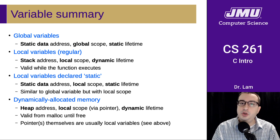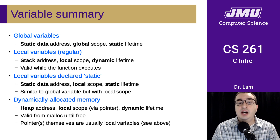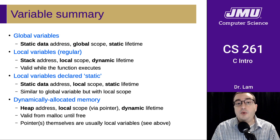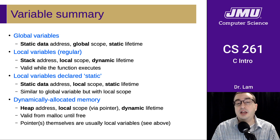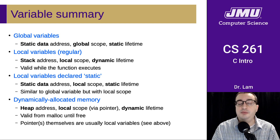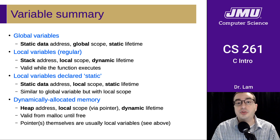There are also special local variables that can be declared static. If you have a variable inside a function declared static, this does not change its scope — it's still only visible inside the function. However, it does change the address and the lifetime. A static local variable is allocated in the static data segment, just like global variables, and it has a static lifetime, meaning it's valid for the entire execution of the program. So it's very similar to a global variable, but one that only has local scope. This is useful for communicating between multiple invocations of a function.